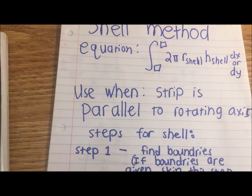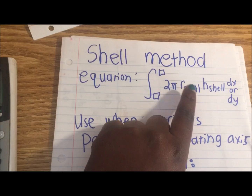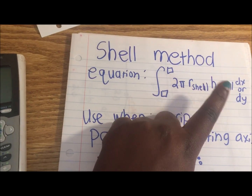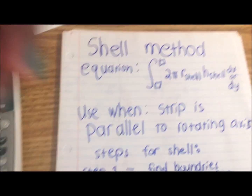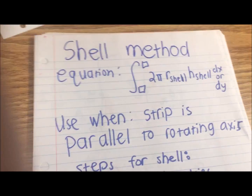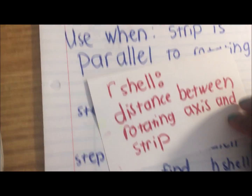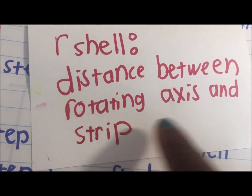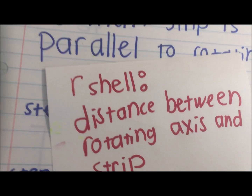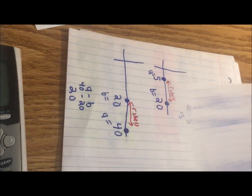Before I move forward, it's really important to explain what r_shell is and what h_shell is. So let me start off with r_shell. R_shell is literally the distance between the rotating axis and the strip. Let me explain what that means with an example.